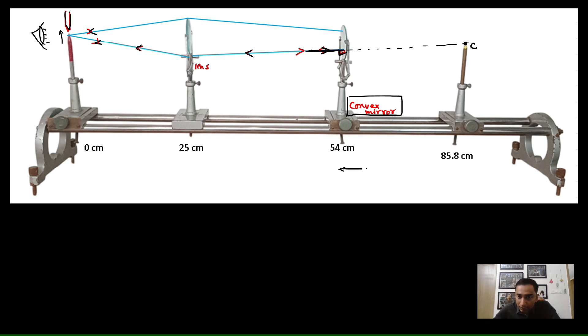Which means that this distance is the radius of curvature. And radius of curvature is the difference between these two. So radius of curvature is 85.8 minus 54 centimeters. So, this is 31.8 centimeters.